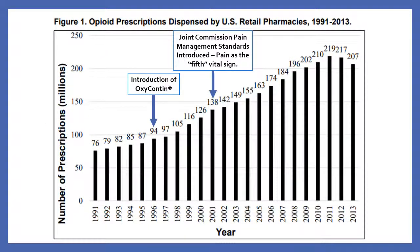Now let's look at trends in opioid prescribing through time. This figure shows opioid prescriptions dispensed by U.S. retail pharmacies from 1991 through 2013 — in millions of prescriptions per year. Since around 1996 you've been seeing a pretty drastic increase in the number of opioid prescriptions going out, largely since the introduction of OxyContin, the extended-release form of oxycodone.